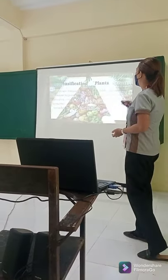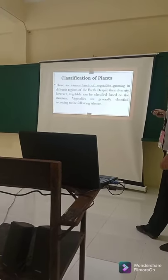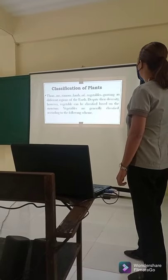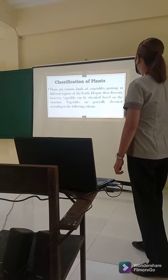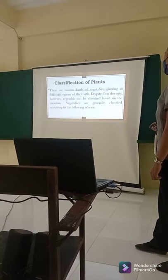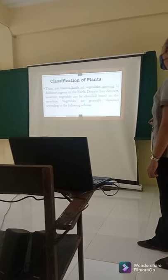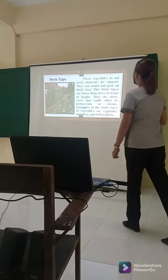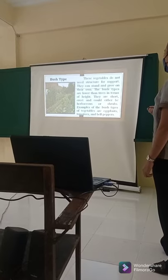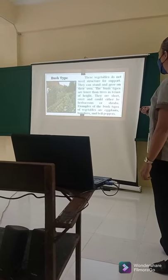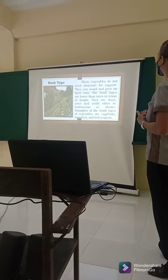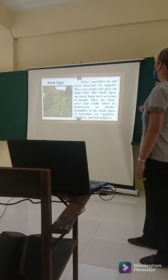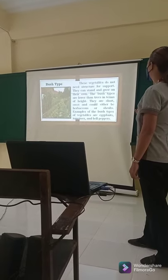Classification of plants. There are various types of vegetables growing in different regions of the earth. Despite all the diversity, vegetables can be classified based on their structure. These vegetables are generally classified according to the following types. Number one is bush-type vegetables. These vegetables do not need a structure to support. Examples are eggplant, tomatoes, and bell peppers. Bush-type plants are short, erect, and could be either herbaceous or shrub.